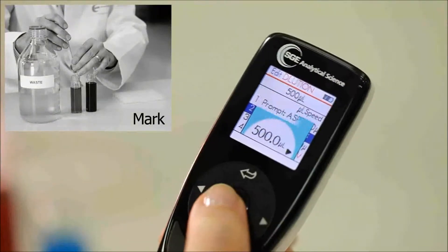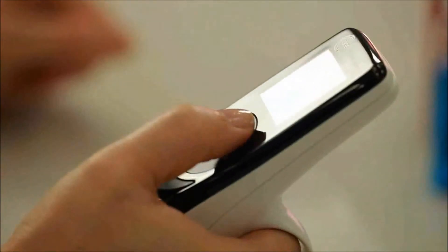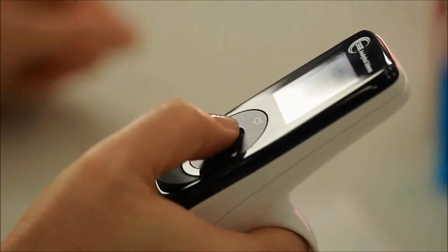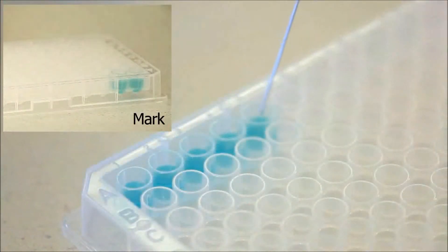First, Catherine selects the volume of liquid and speed for aspiration. Next, Catherine sets her method to dispense the liquid five times for each of five wells.